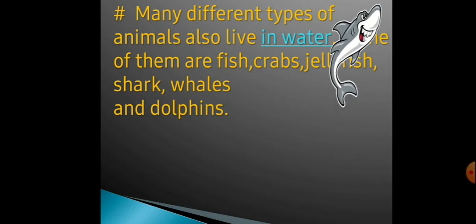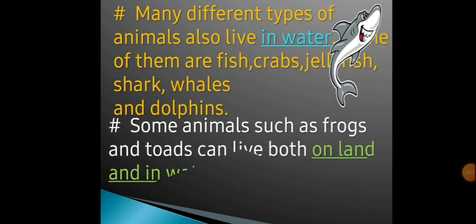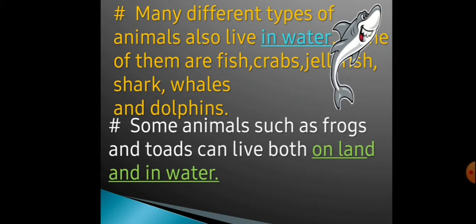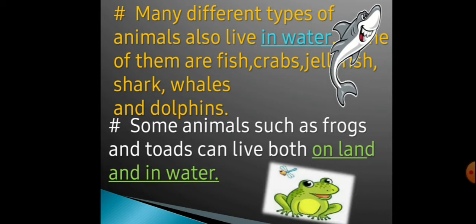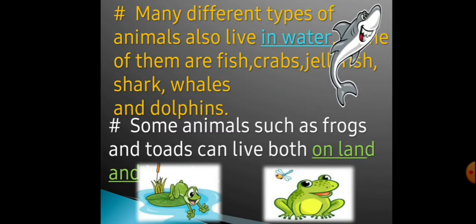Jo yeh sare animals hain, woh water mein rehte hain, matlab paani mein rehte hain. Agar hum kabhi paani ke paas jaayenge — sea hai, ocean hai, ya river hai — wahan pe fish milegi, crabs milenge, jellyfish milegi, shark milenge, whales aur dolphins milenge. Some animals such as frogs and toads can live both on land and in water.